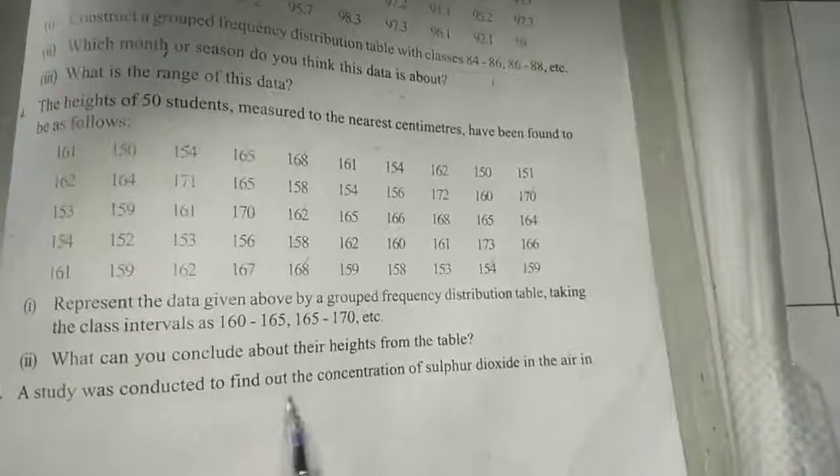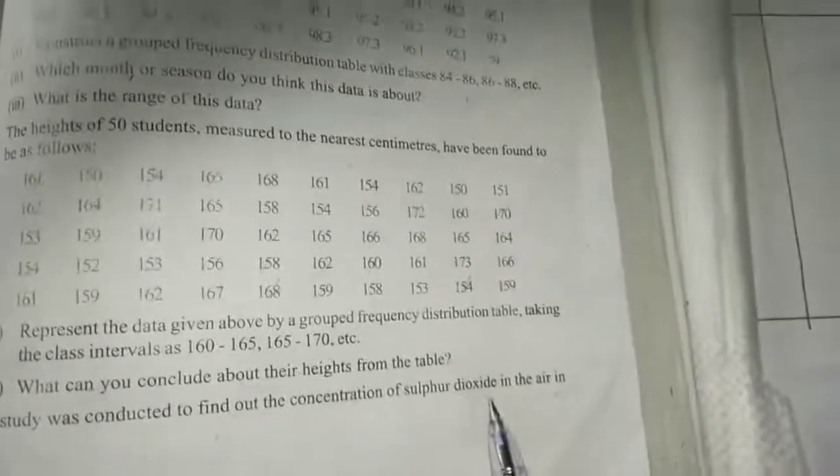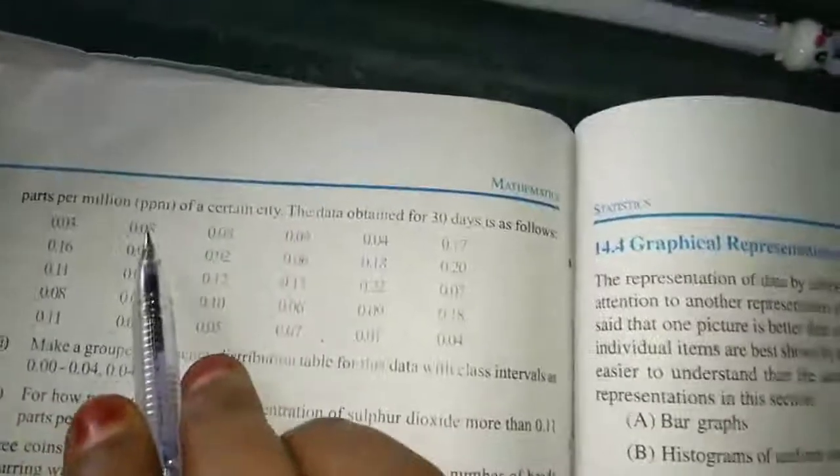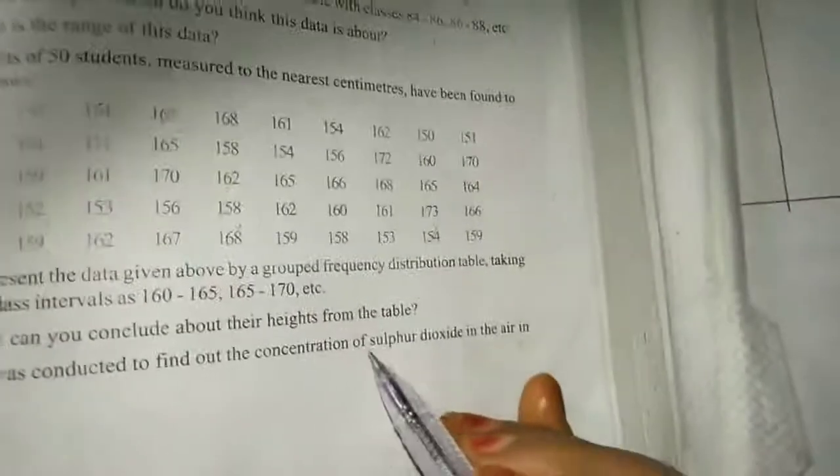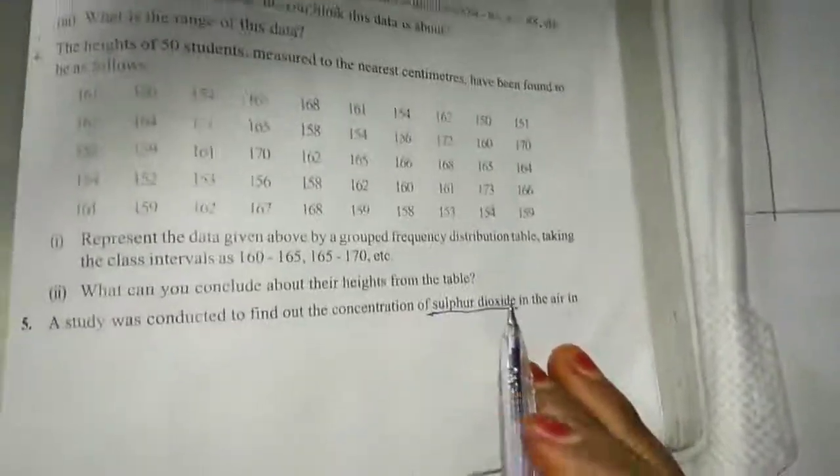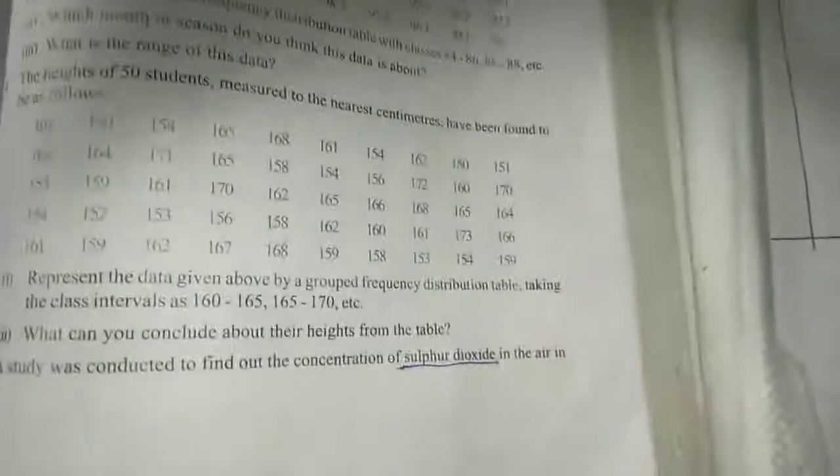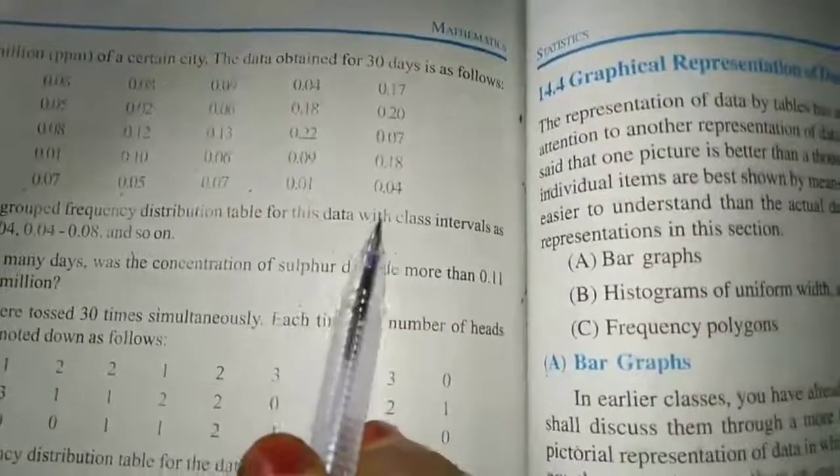Answer is in the interval which one is more. Fifth sum: a study was conducted to find out the concentration of sulfur dioxide in the air in parts per million (ppm) of a certain city. The data obtained for 30 days is as follows. Make a grouped frequency distribution table for this data with class intervals as 0.00 to 0.04, 0.04 to 0.08 and so on.